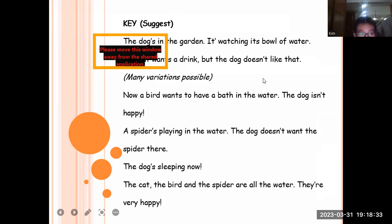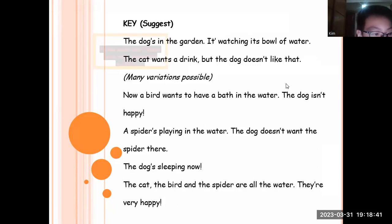It is watching its bowl of water. The cat wants a drink, but the dog doesn't like that. Now a bird wants to have a bath in the water. The dog isn't happy. A spider's playing in the water. The dog doesn't want the spider there. Now the dog's sleeping.